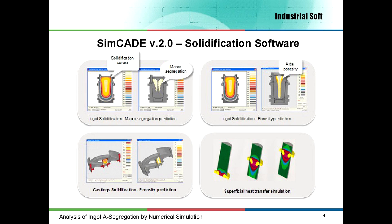In this slide I present Simcade V2.0, the solidification software we have developed to simulate the solidification and control the segregation process. The software takes into account the initial temperatures and thermophysical properties of the steel poured, mold material and refractory bricks. I have several applications to demonstrate the possibilities of the simulation software. The first example shows the solidification profile of an ingot and a segregation prediction. The second one shows the solidification profile and the simulation of axial porosity into a steel ingot. The third example shows the simulation of porosity in steel castings, and the last one is an application in the heat treatment area.